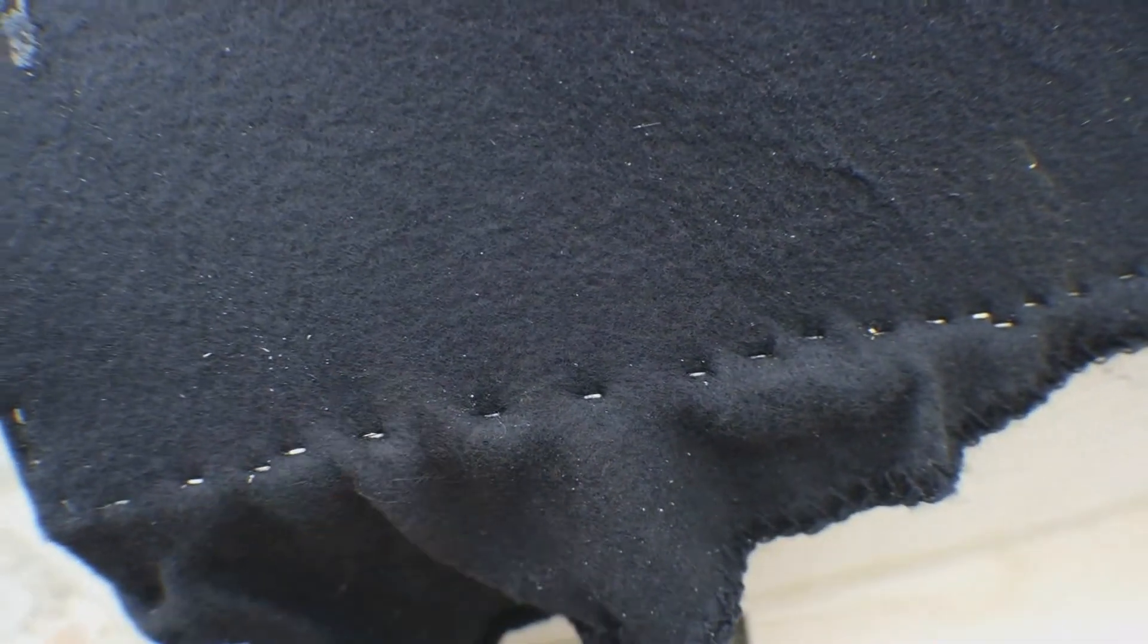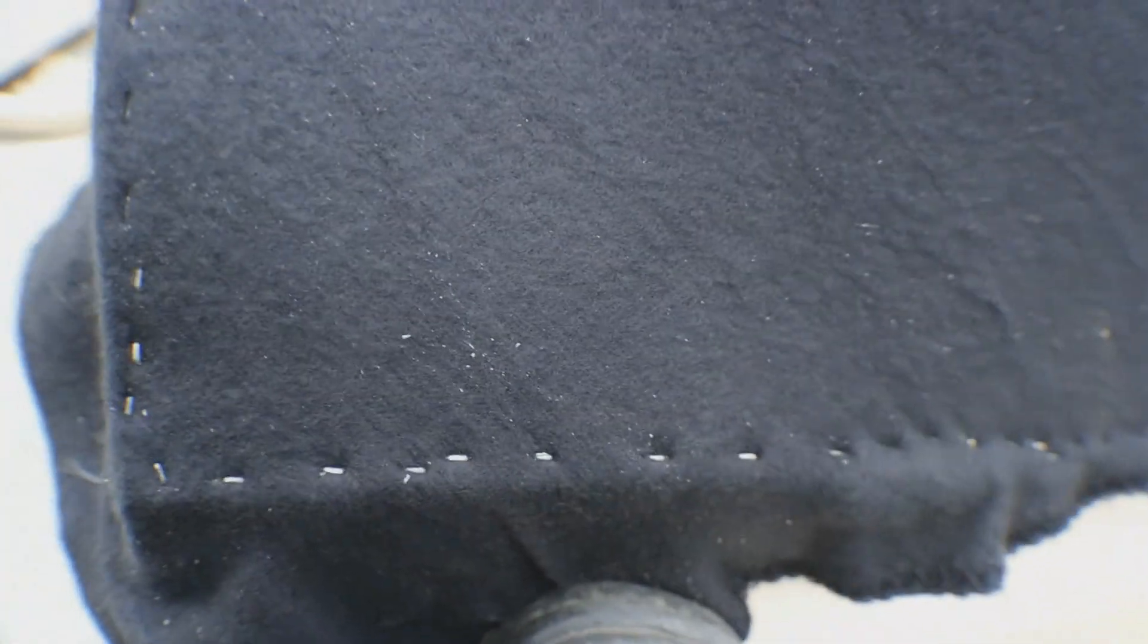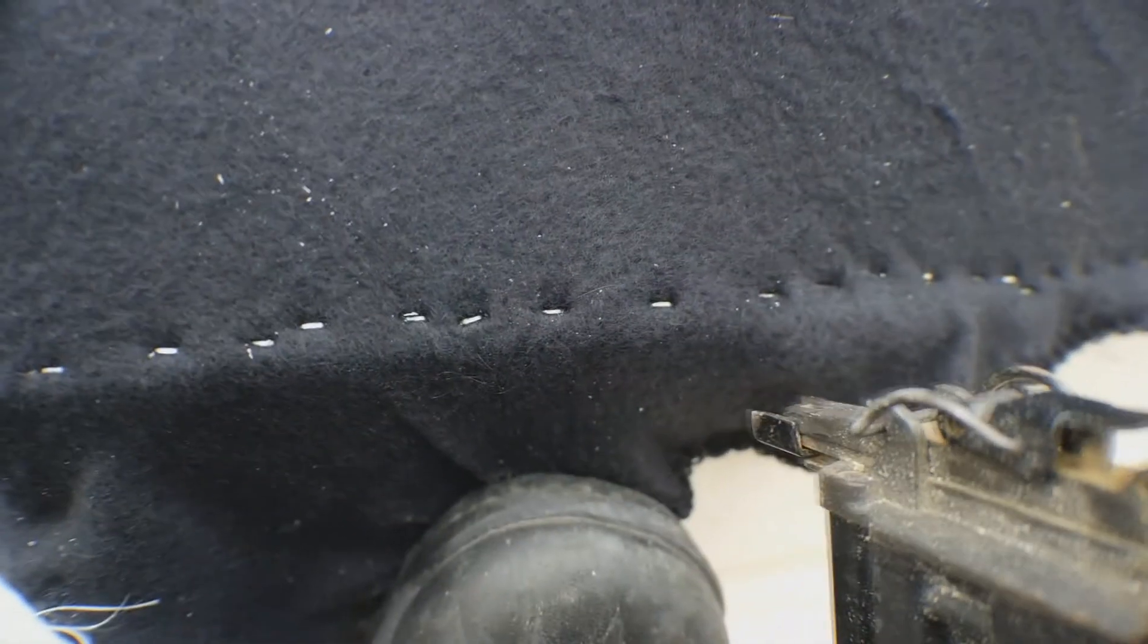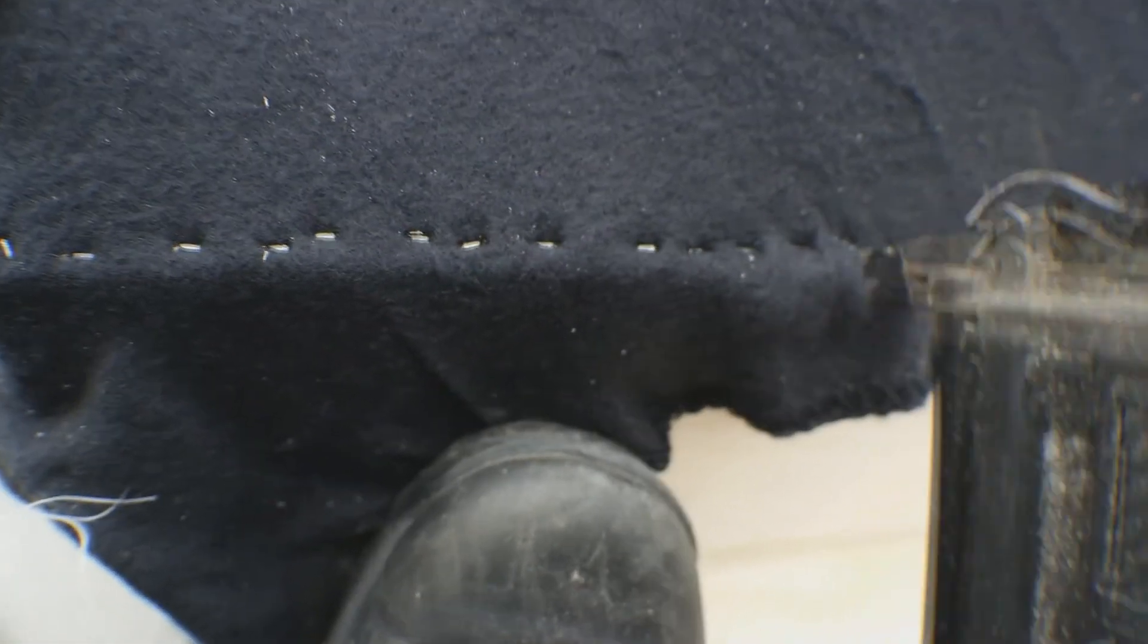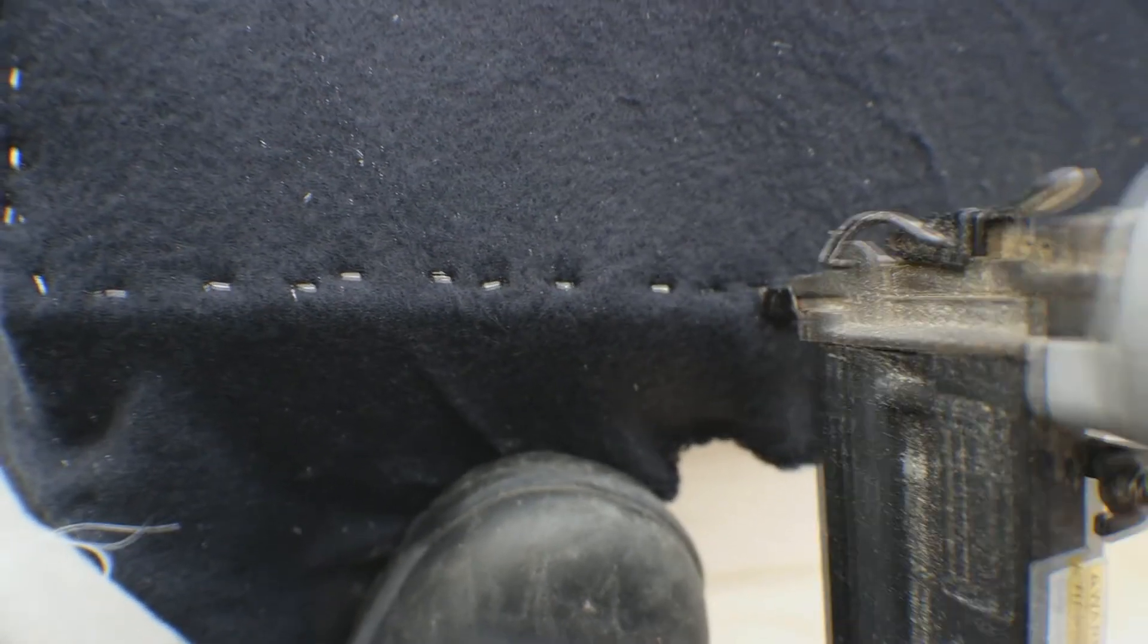One thing to remember is you leave about an eighth to a quarter inch gap between each staple, depending on how it's laying out. For example, here I missed a spot. So you gotta make sure it's about a quarter inch. I like to put an eighth just so the resin adheres very well, because I like to really really stretch it.